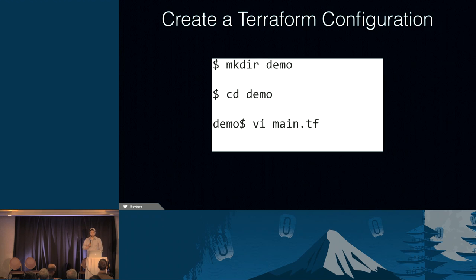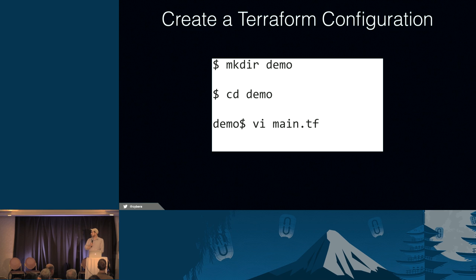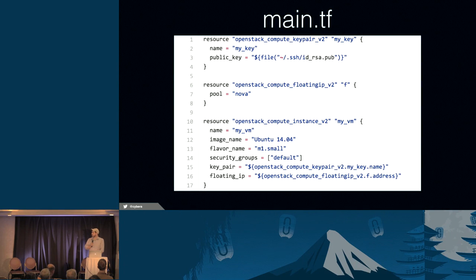Once you have it installed, you create a Terraform configuration through a plain text file. Terraform configurations are added to a file with an extension of .tf, and any text editor works for that. Inside the main .tf file, you start declaring your resources. This is a simple example that declares three resources. If this is the first time you've seen Terraform configuration, you might not understand the exact syntax, but you can sort of figure out what's going on.